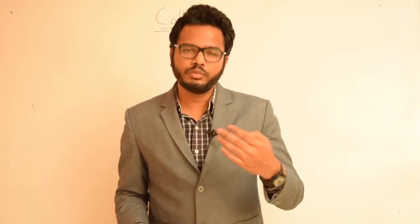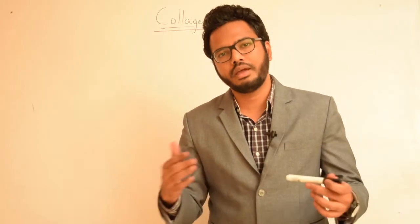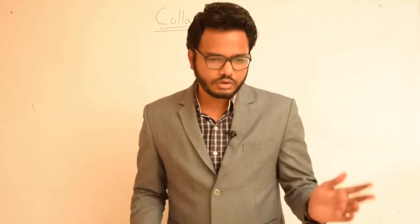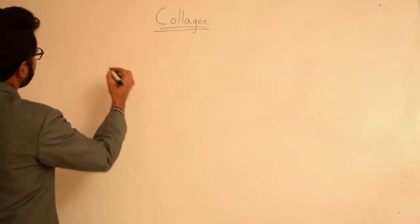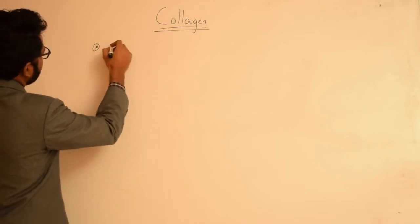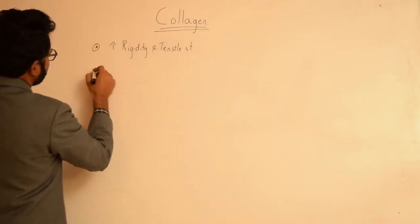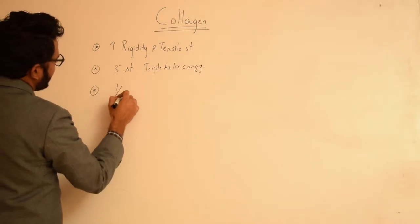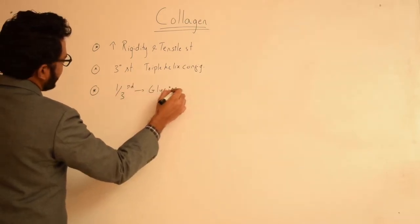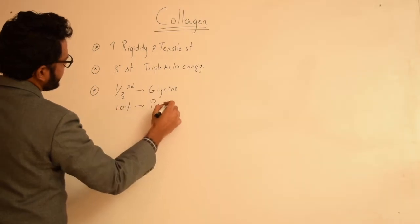In this video let's discuss few important points pertaining to collagen. Collagen is the most abundant protein in the human body and is characterized by high tensile strength as well as rigidity. The tertiary structure of collagen has a triple helix configuration. One third of collagen is constituted by glycine and around 10% by proline. These are amino acids.